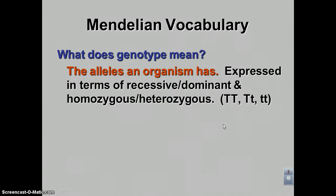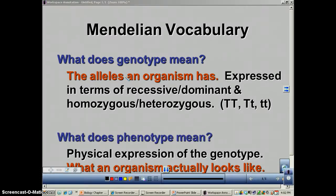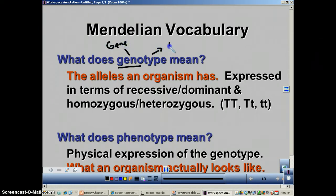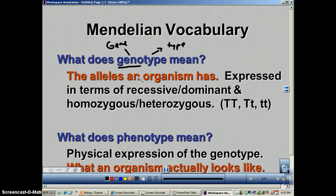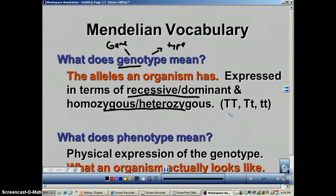Genotype and phenotype are our next pair of vocabulary words. 'Geno' refers to gene, and 'type' just means type — so genotype is the type of genes you have. When talking about genotypes, we use words like dominant, recessive, homozygous, and heterozygous, or we use the letters. If an individual is homozygous dominant, we have just described that individual's genotype — the type of genes they have.